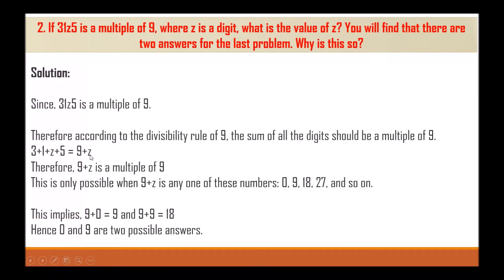Therefore 9 + z is a multiple of 9. This is only possible when 9 + z is any one of 0, 9, 18, 27, and so on. This implies 9 + 0 = 9 and 9 + 9 = 18. Hence z = 0 and z = 9 are the two possible answers.